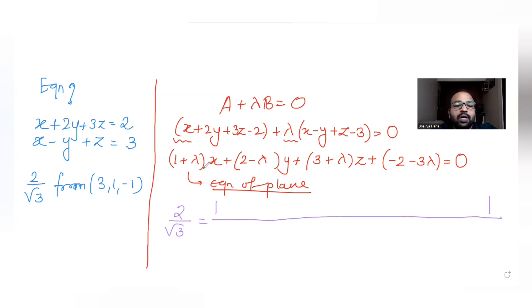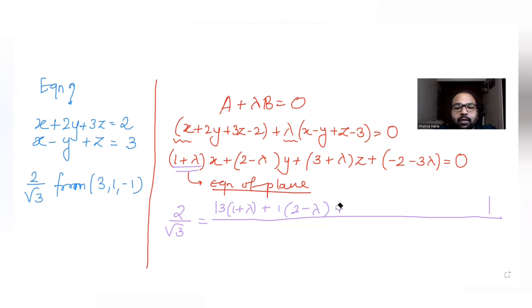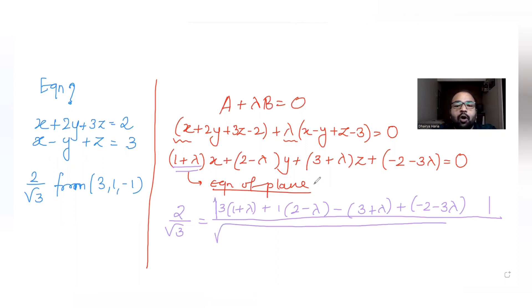For the numerator of the distance formula, I substitute the point (3, 1, -1): coefficient of x times 3 gives 3(1 + λ), plus coefficient of y times 1 gives 1·(2 - λ), plus coefficient of z times (-1) gives -(3 + λ), and the constant term is (-2 - 3λ).